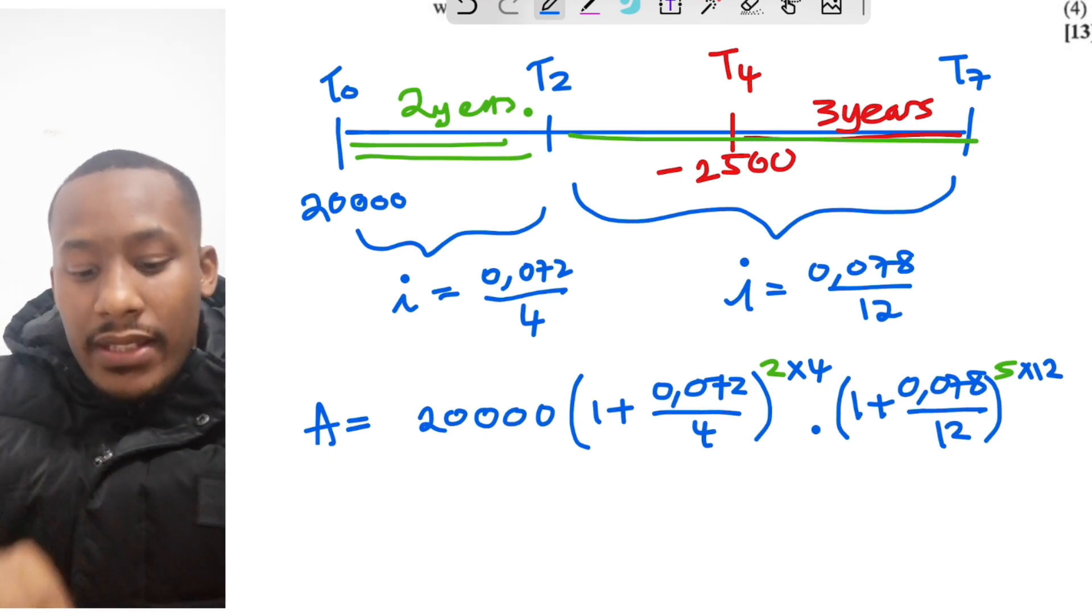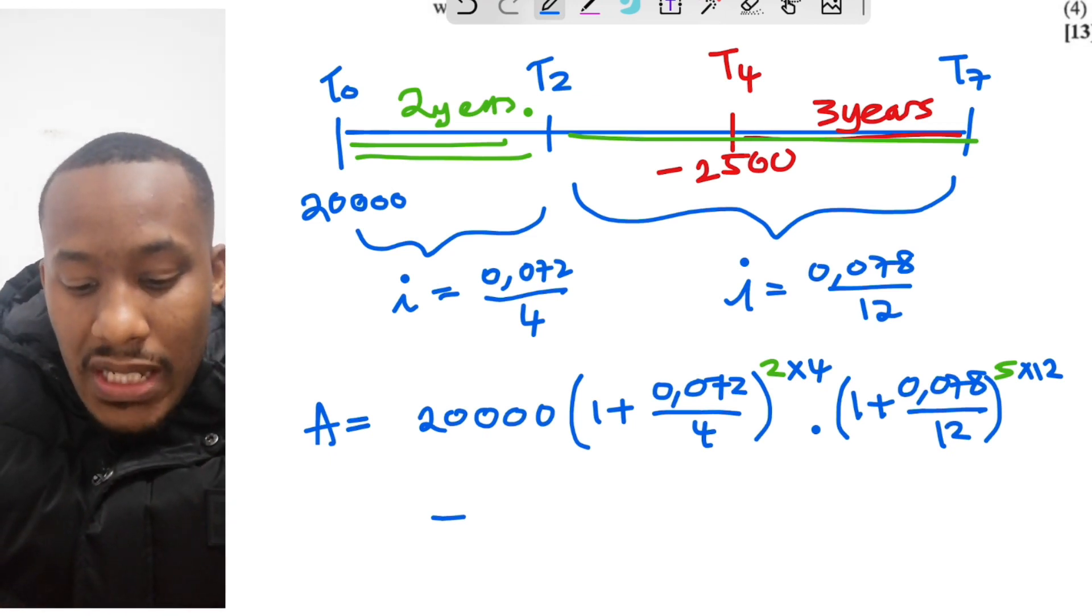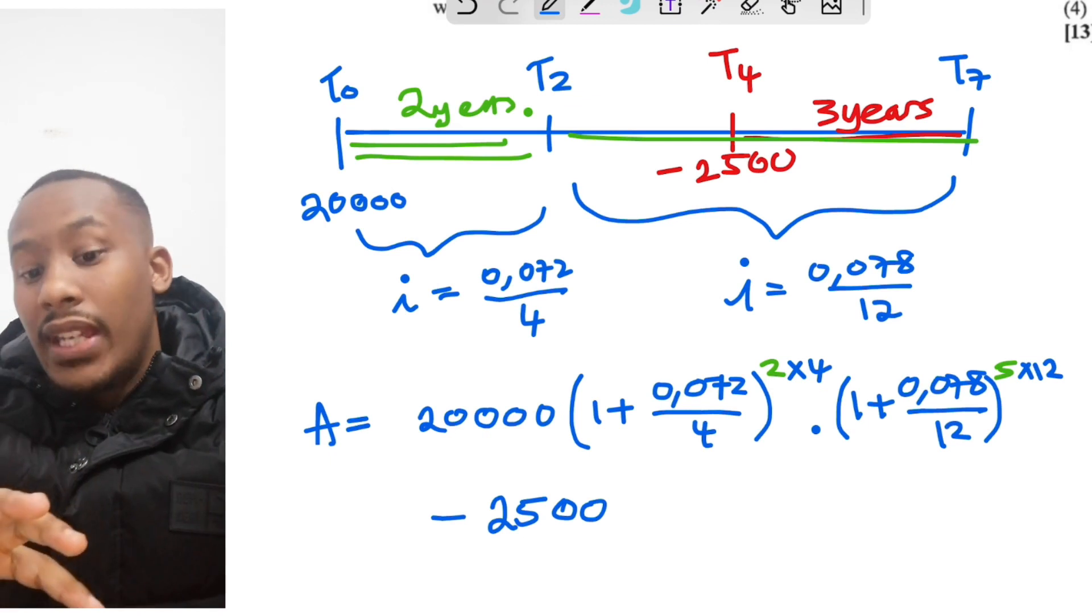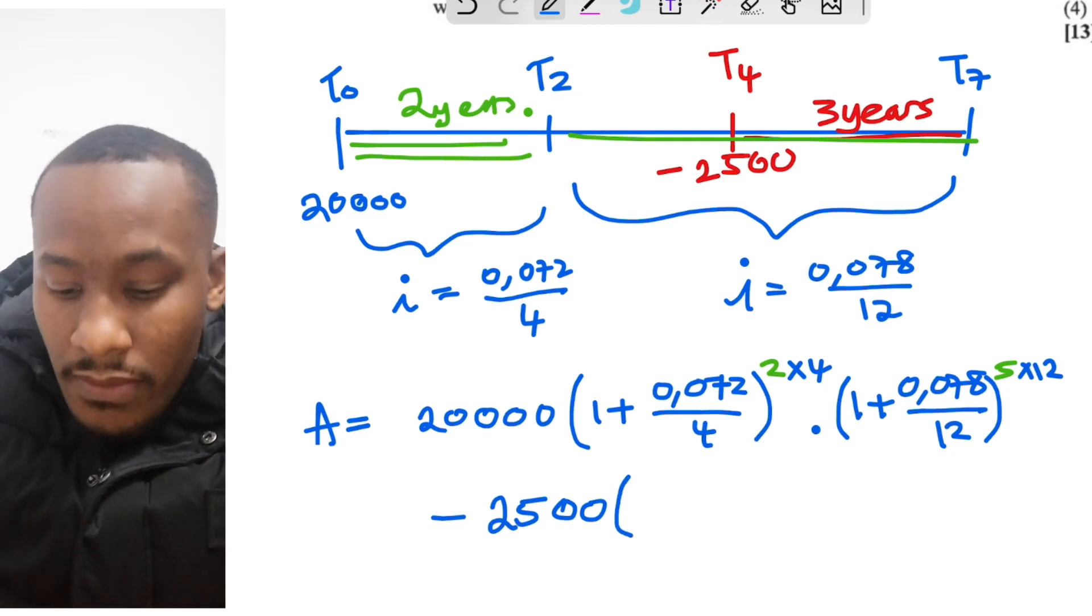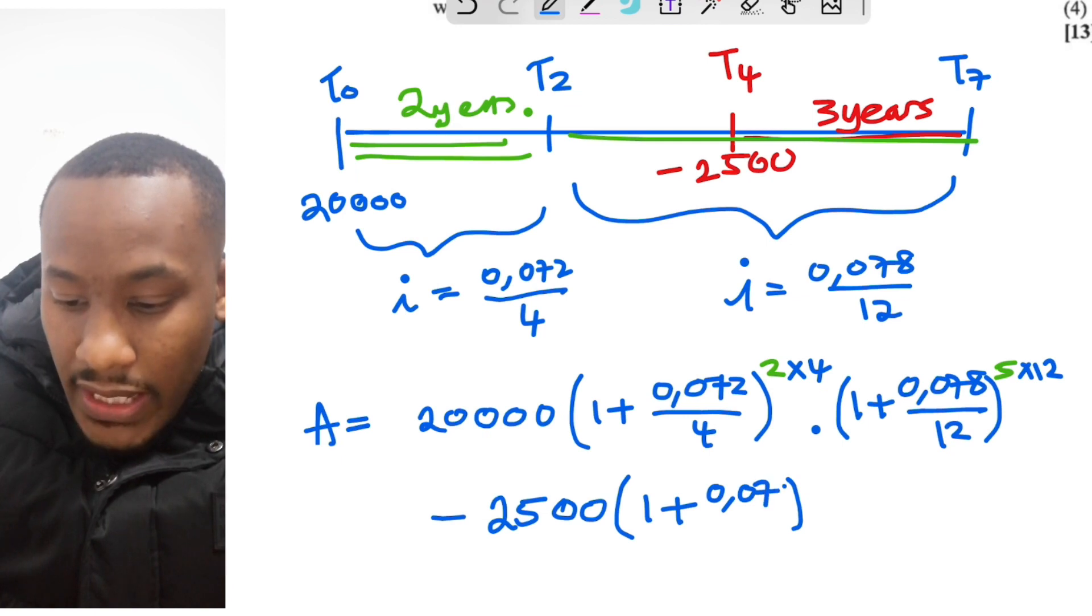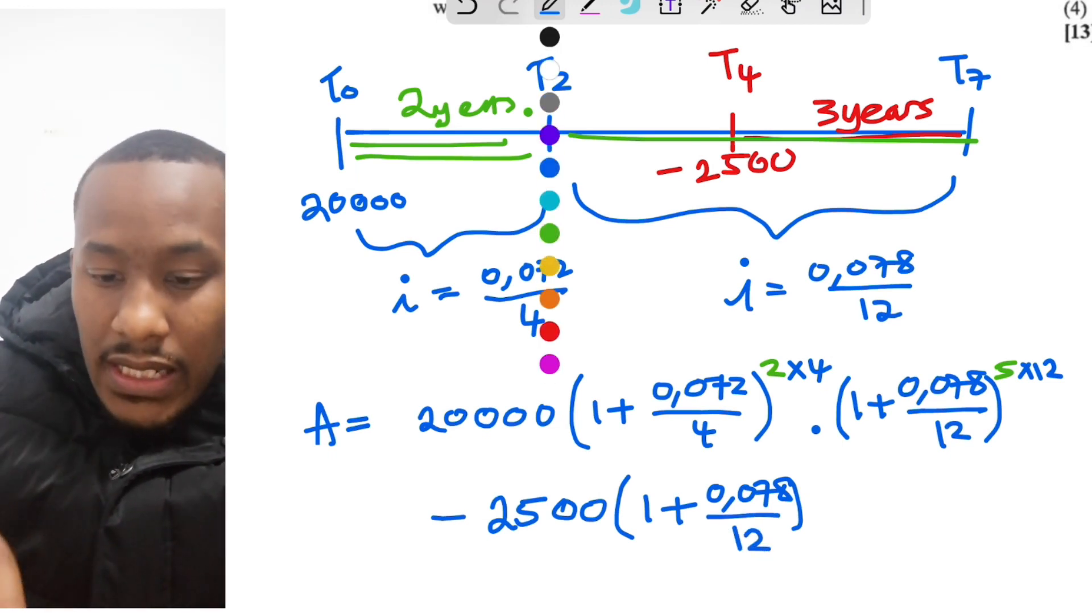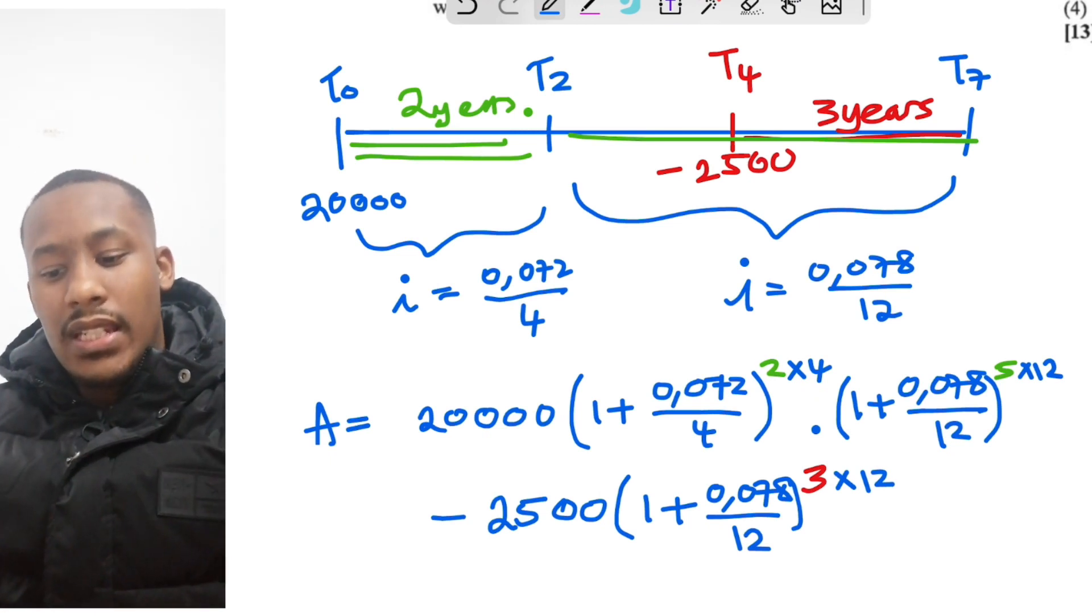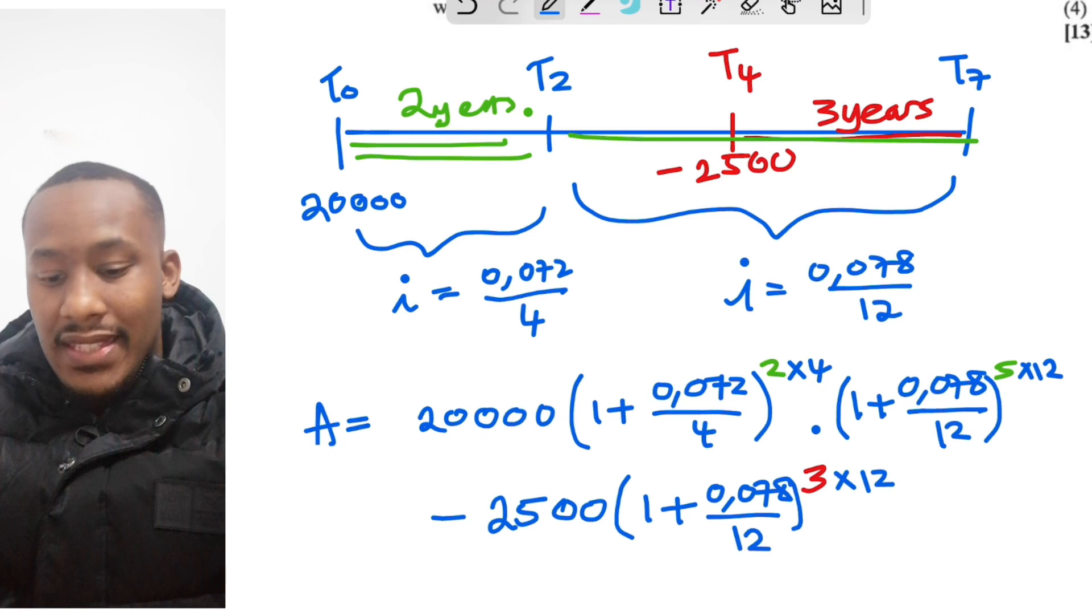We are now going to subtract the withdrawal that was made. Now this withdrawal, we can't just subtract the 2,500, because that 2,500 would have generated interest had it been left there. So we need to subtract the 2,500 and the potential interest that would have come with that. So we subtract 2,500 times 1 plus 0.078, because that was the interest rate for this three-year period, divided by 12 to the power of 3 times 12. So that's just 36. I will simplify it when I type this out into the calculator. So this is going to give us our final answer, so let's work it out.